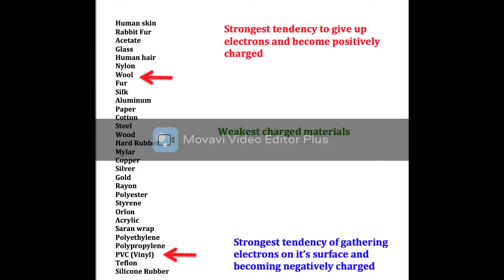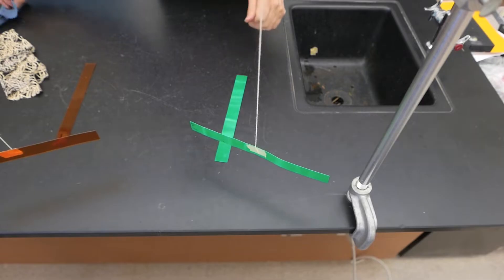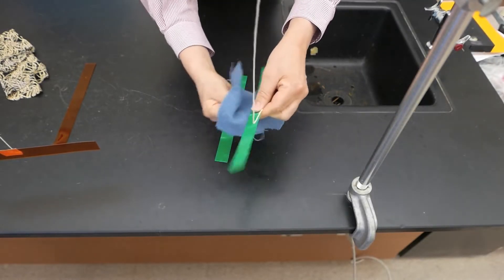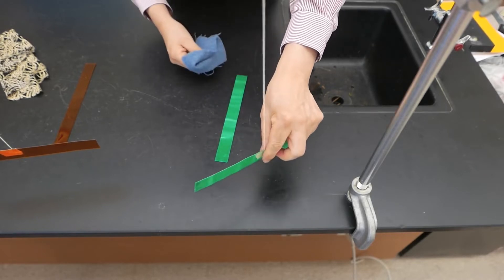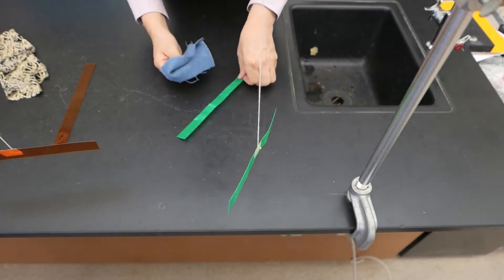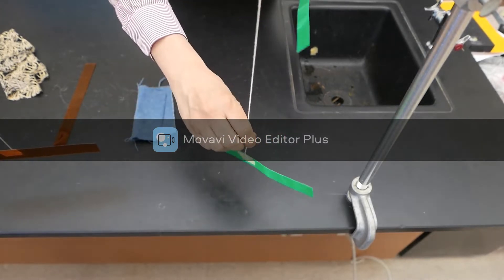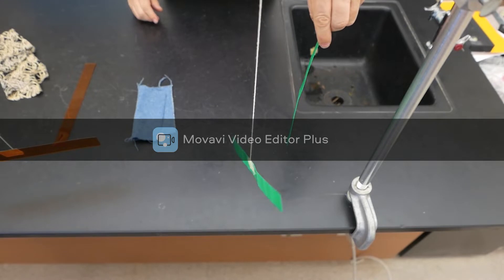Now, let's try rubbing that vinyl strip with wool. Now, when we do this, I do want to rub both the strips. I'll start with the one that's hanging down. Get both ends of it. There we go. And now I'll rub the second strip with the wool. Bring it near. And it pushes it away.